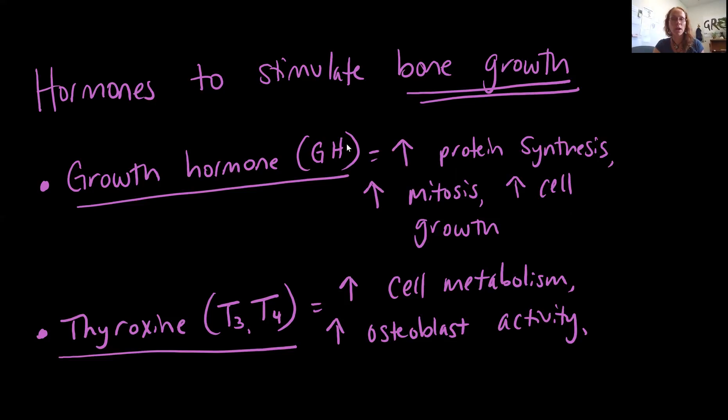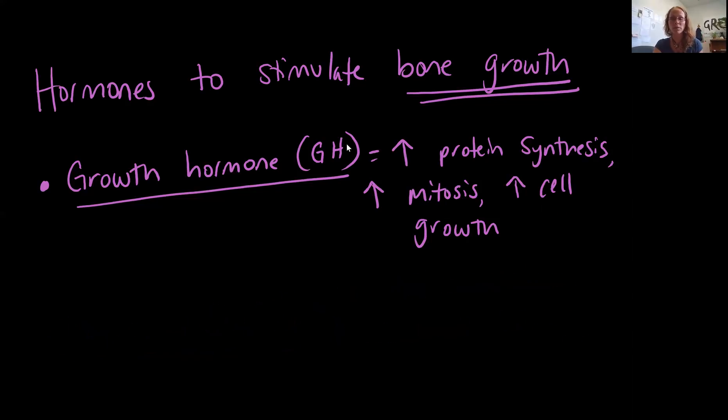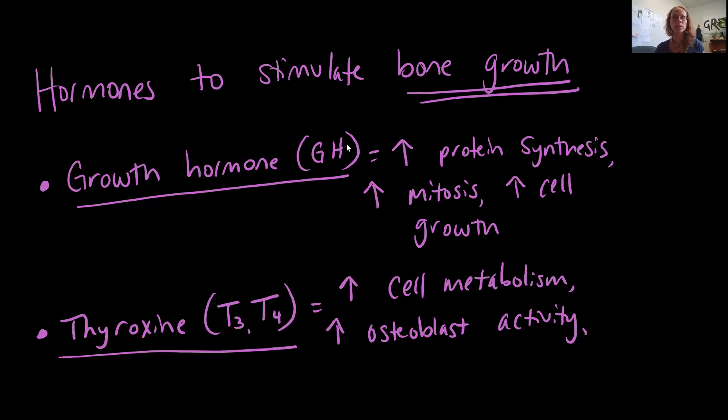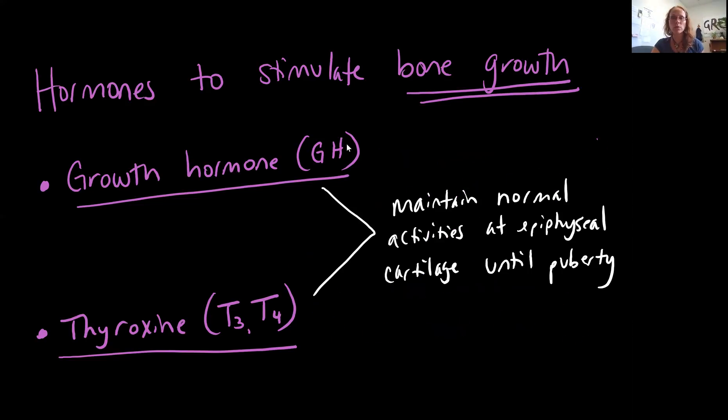We have released from our thyroid gland a group of hormones collectively called thyroxins. Notice each of our hormones has also a corresponding abbreviation, so make sure you're paying attention to that as well. Looking back up at growth hormone, the abbreviation there was GH. When we talk about thyroxins, these are abbreviated as T3 and T4. These hormones are in general terms increasing the cellular metabolism across the board in the body, but here in our bone that means increasing the activity of our osteoblasts as they are going through that process of making and releasing bony matrix. Collectively these two hormones are important in maintaining our normal activities at that epiphyseal cartilage until puberty.